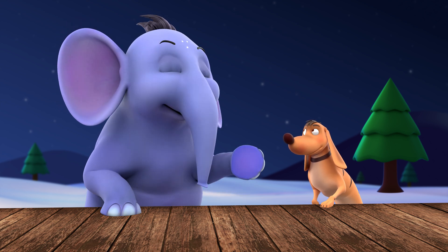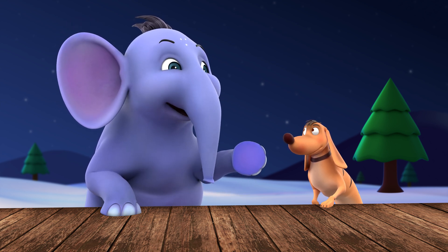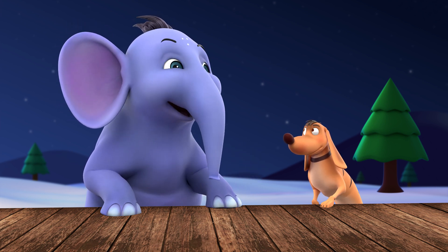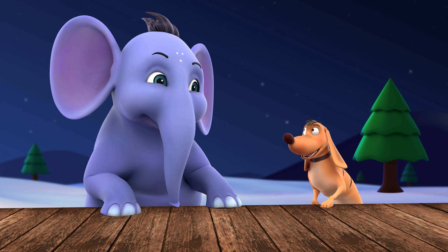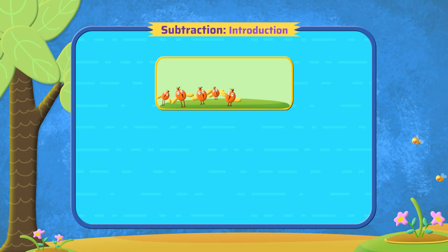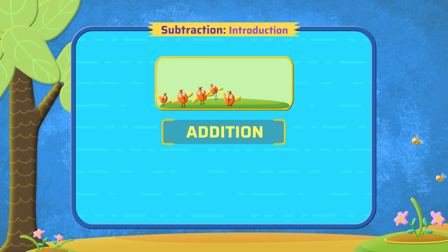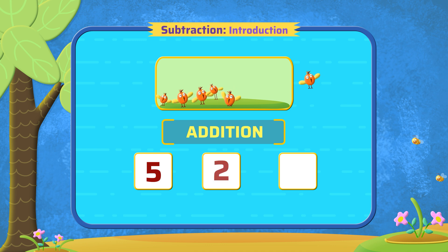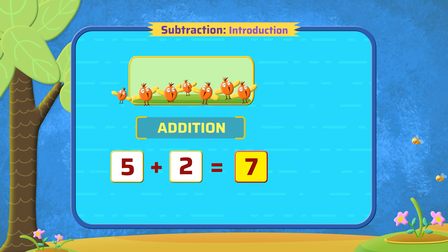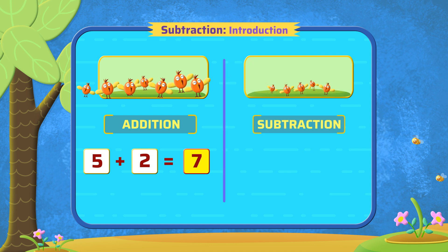Okay, so now that you know addition — which is putting together — let's learn about subtraction. Let's compare addition and subtraction. In addition, we put together. There are five birds and two fly in, so we have to add 2 to 5, and we write it as 5 plus 2 equals 7.